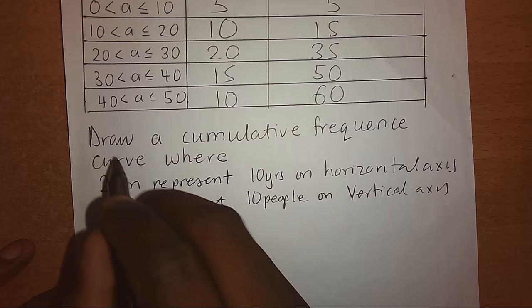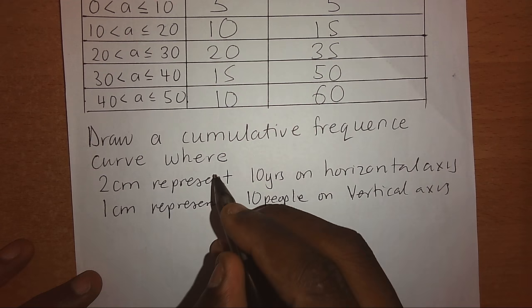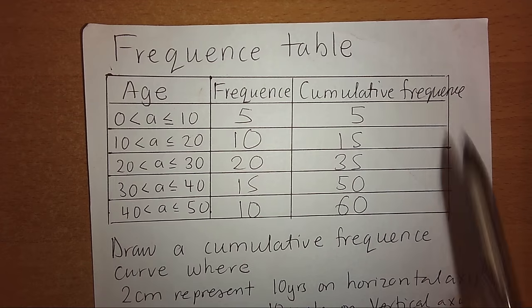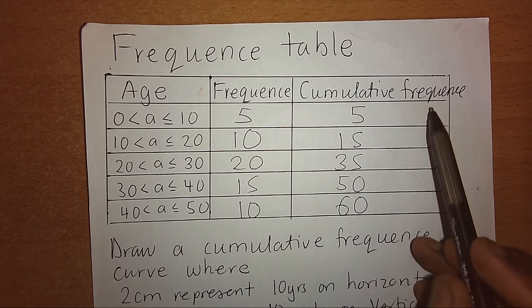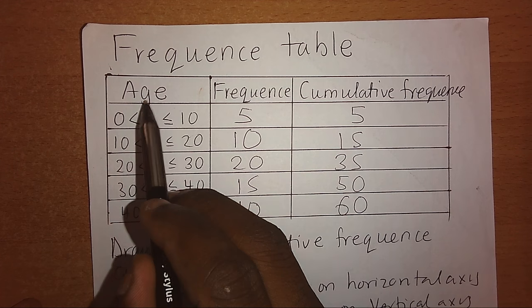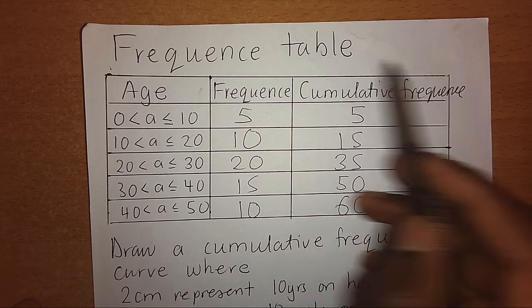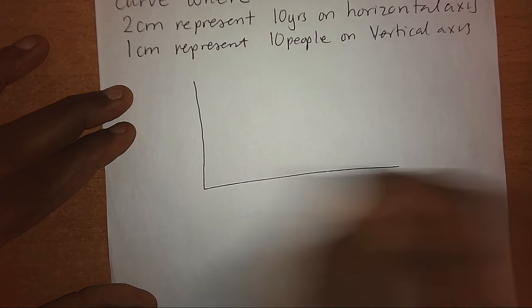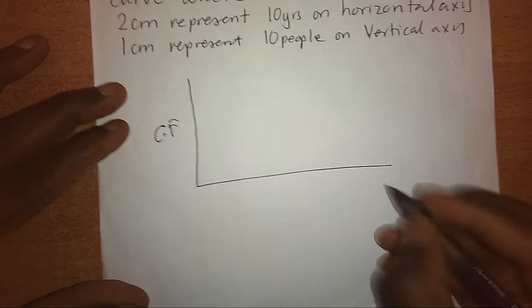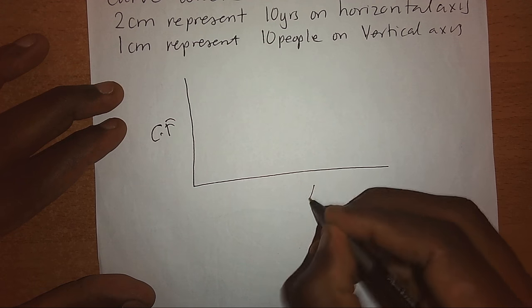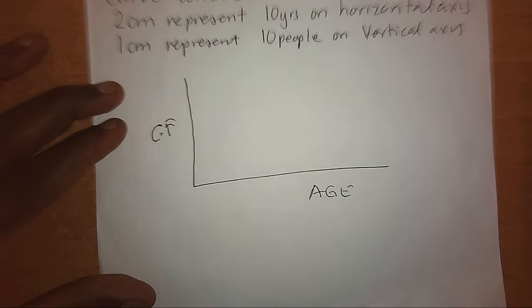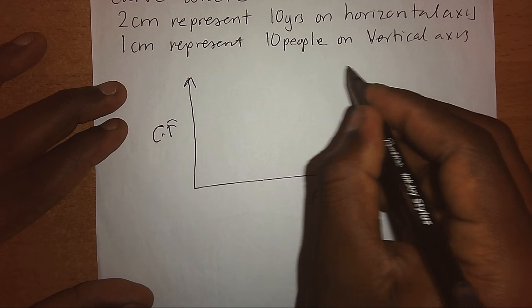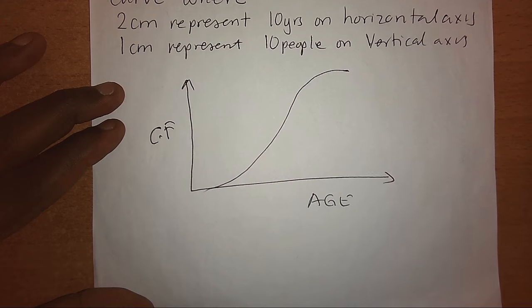If we want to draw a cumulative frequency curve, we are going to use the age and the cumulative frequency. The age will always be on the horizontal axis and the cumulative frequency will be on the vertical axis. The cumulative frequency curve is represented in the format of an S — a sliding S.